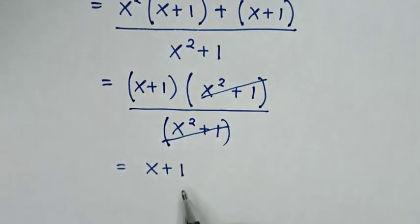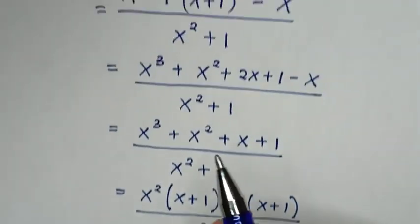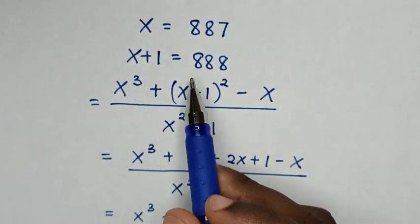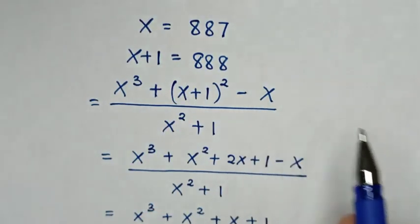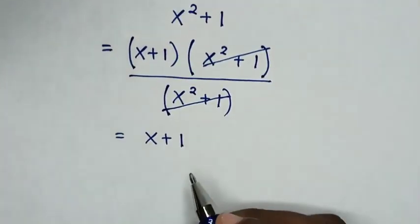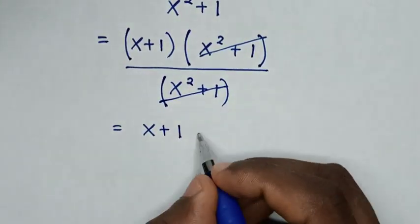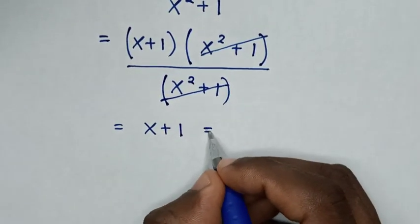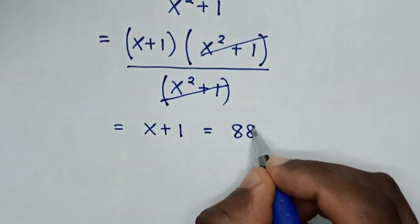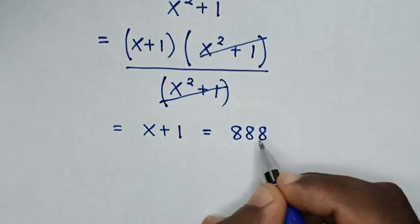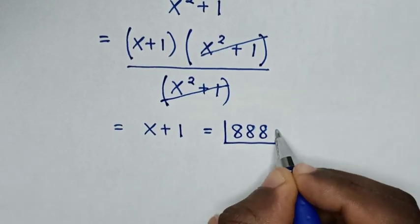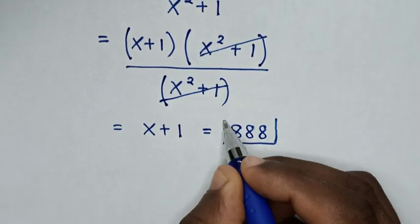Now from x plus 1 — before, we let x plus 1 equal to 888. So in here it will be equal to 888. Therefore, 888 is our final answer.